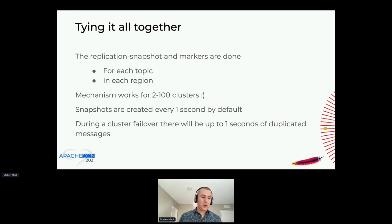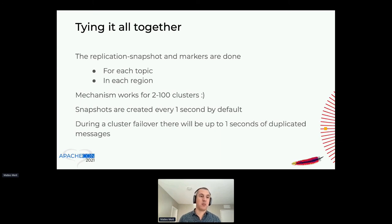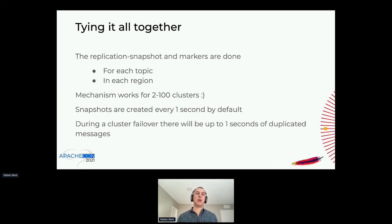Tying it all together: each topic has its own cycle of these snapshots, and each region does the same — cluster A, B, and C each create their own snapshots. This method works from 2 to 100 clusters. The markers are very tiny so there's not a lot of extra traffic, and markers are paused if there's no traffic on the topic. By default, snapshots are created every one second, which means on failover you get at most one second worth of duplicates. You can increase that period to 10 or 30 seconds for less overhead, or decrease it to 100 milliseconds for fewer duplicates.